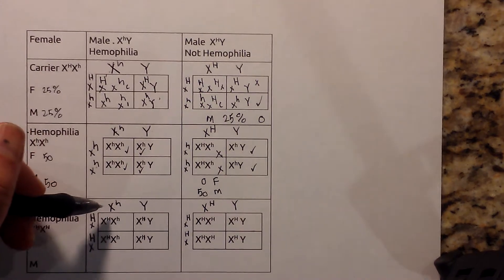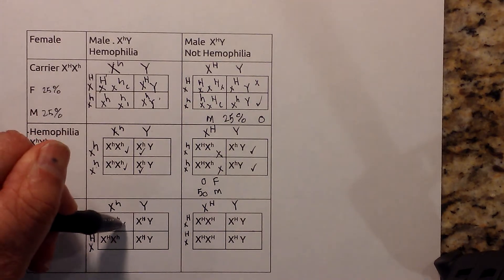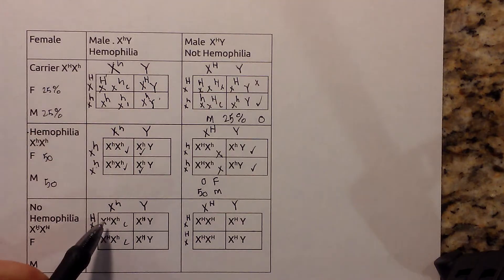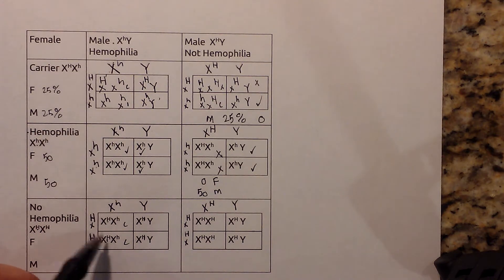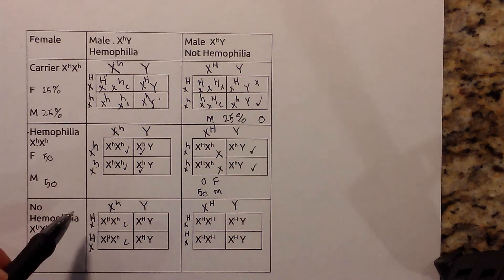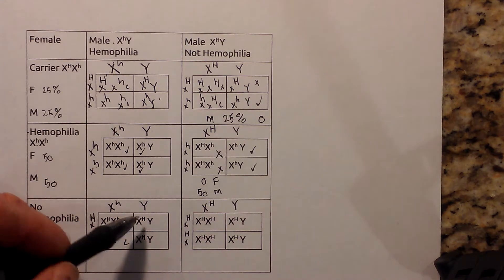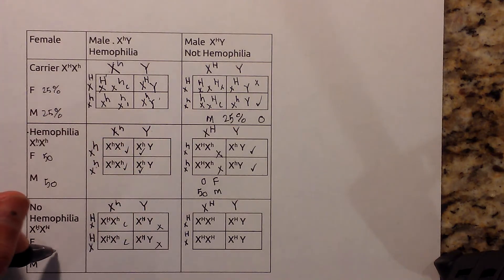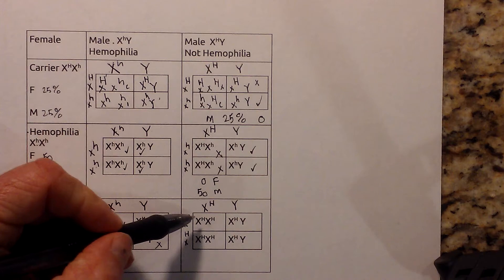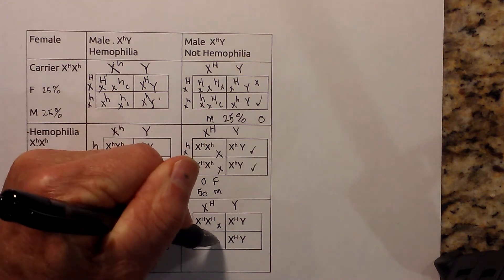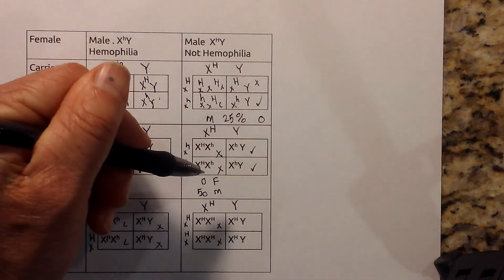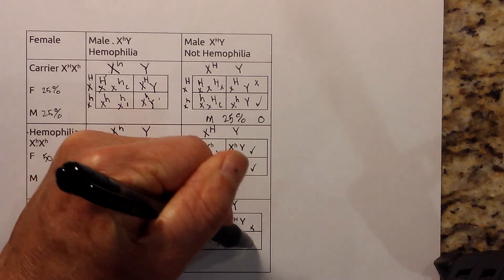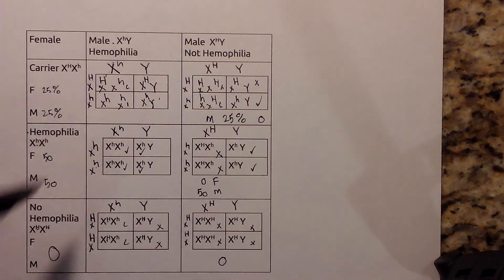Here we have female carriers — these are carriers because you have one capital letter, and since it's a recessive trait, you need two lowercase letters to have the disease. In this example the male will not get it, so there's a 0% chance here. And finally in the last example, there's no hemophilia — 0% chance here as well.